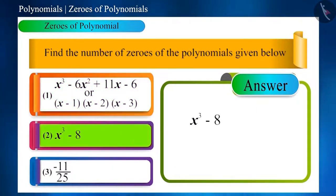If we equate the polynomial of the second option to 0, then we get x³ - 8 = 0. That is, x³ = 8. That is, x = 2. This polynomial has only one zero.